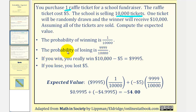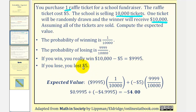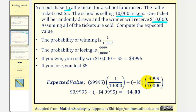If you win, you don't really win $10,000 — you'd actually subtract the cost of the ticket, so you win $9,995. And if you lose, you lose your $5 from purchasing the ticket. The expected value equals the outcome of winning times the probability of winning, plus the outcome of losing times the probability of losing.